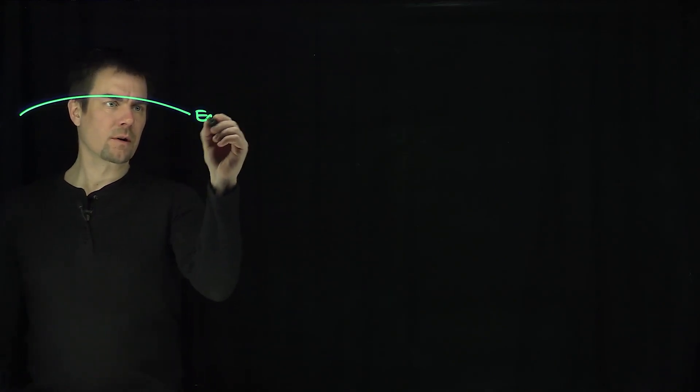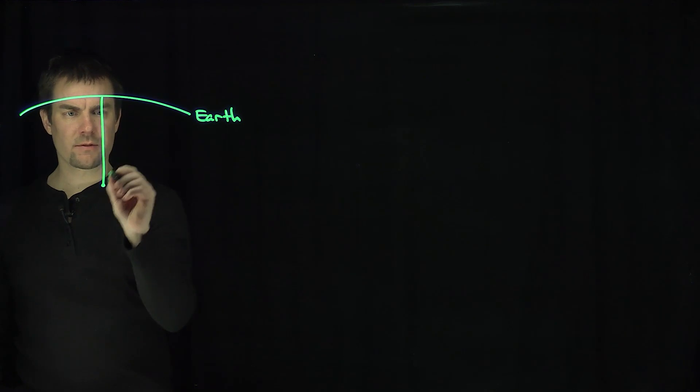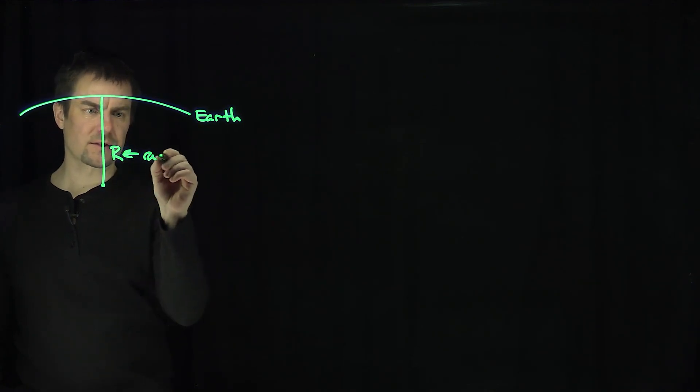Suppose we're given the following situation. We have Earth over here, and this is going to be the radius of Earth. R is the radius of Earth, that's a constant.